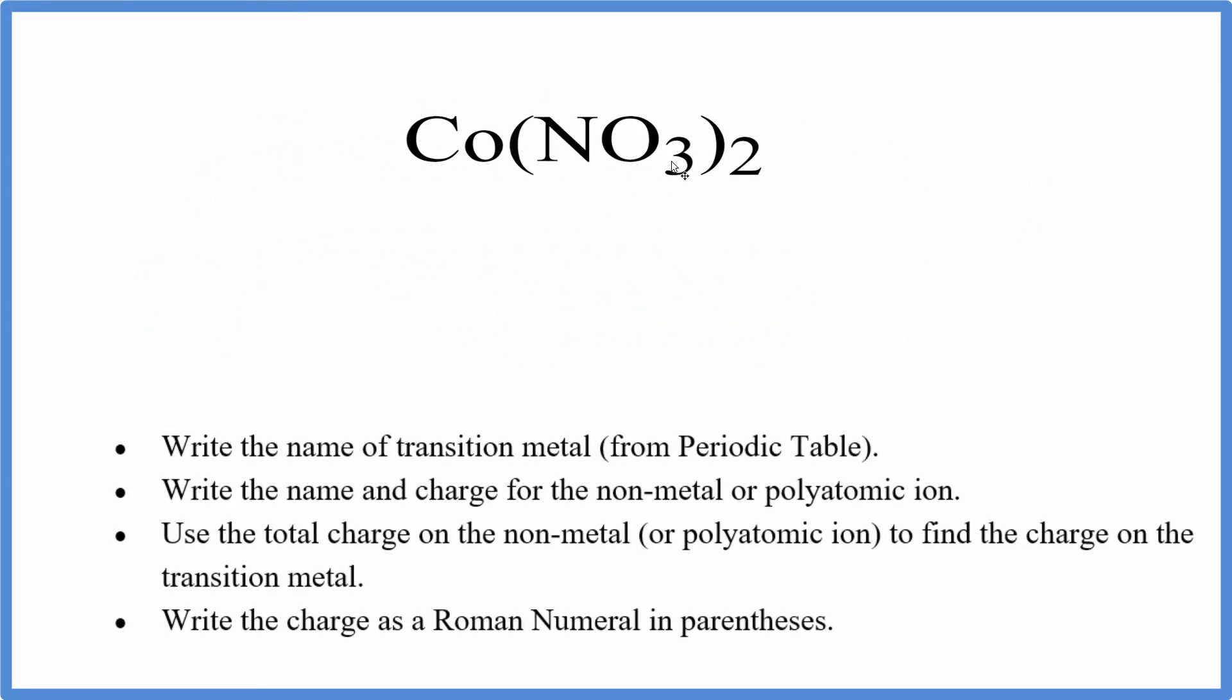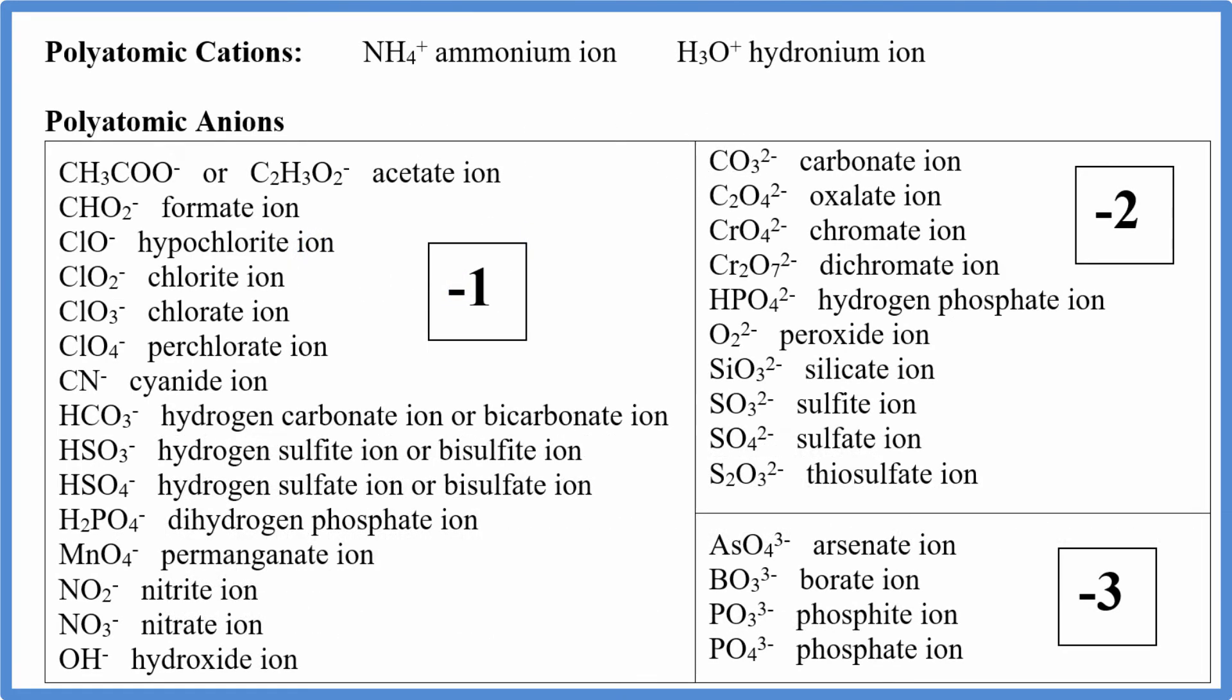When we have compounds with a polyatomic ion, that's when we have two or more nonmetals together attached to our metal. It's the same process, we just need to name the polyatomic ion. To do that, we look up Co, that's cobalt, which is a transition metal, and for the NO3, we need to look at a table of common polyatomic ions. If we do that, we go to the table, and we find NO3, and that turns out to be the nitrate ion.